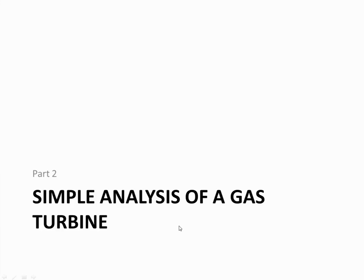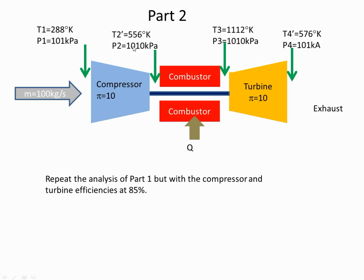So this is part two of our simple analysis of a gas turbine engine. In part one we had established the ideal temperatures and pressures at the output of the compressor and turbine, and now we're going to see how they are modified when we take into account the efficiencies of the turbine and the compressor respectively.